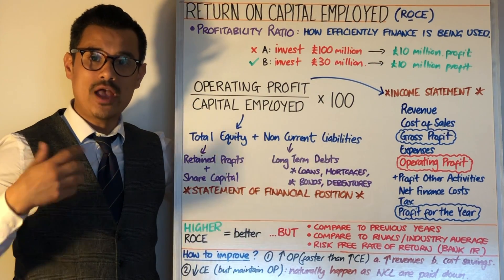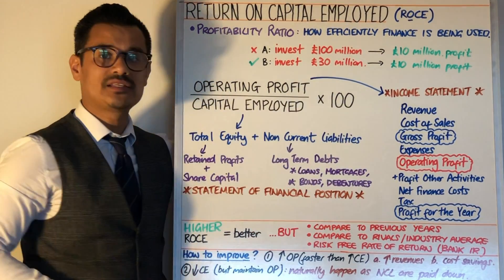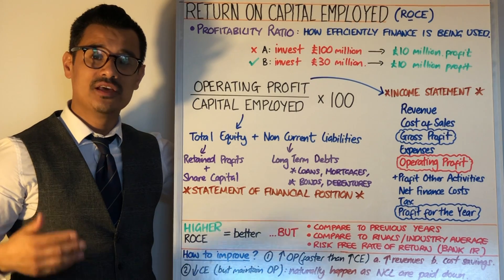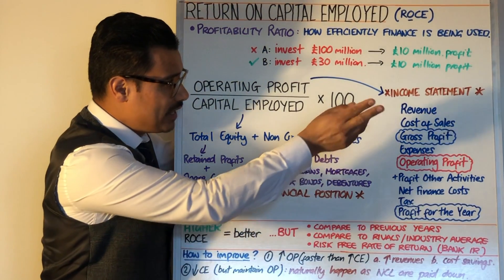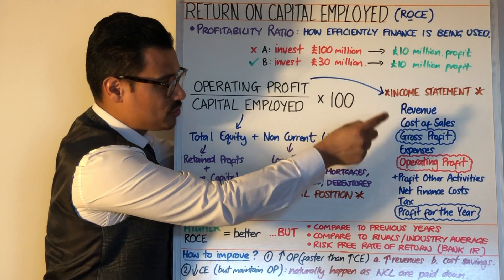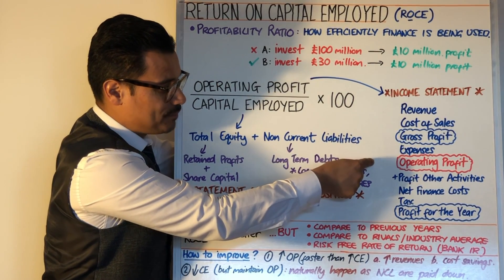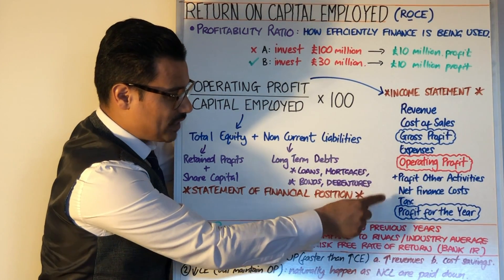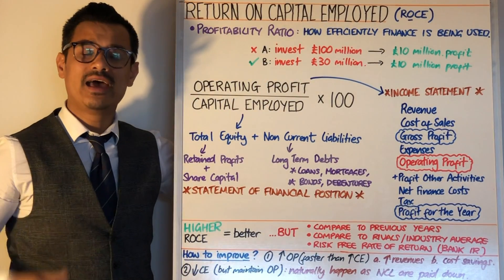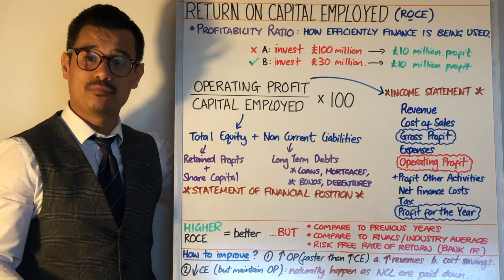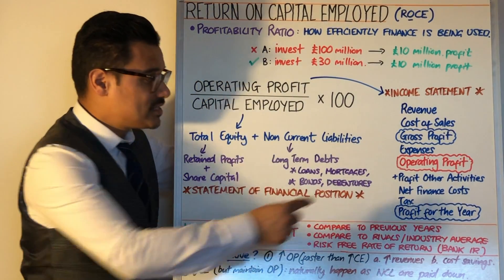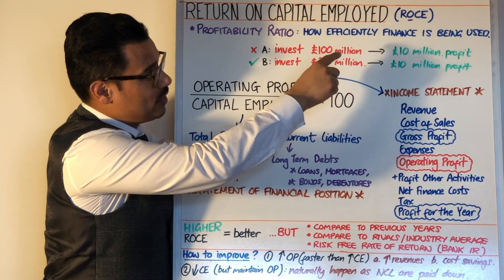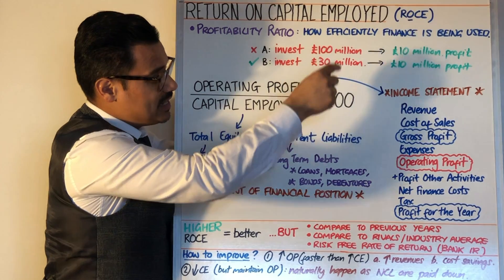The important thing is where you obtain the information from. Operating profit comes from the profit and loss statement — the income statement, or if you're on A-Level, the comprehensive statement of income. In an income statement it goes: revenue, cost of sales, gross profit, expenses, operating profit, and then profit from other activities, net finance cost, tax, and profit for the year. An interesting way to remember ROCE is that operating starts with an O — O-ROCE — operating profit.